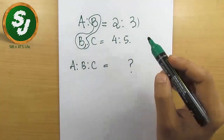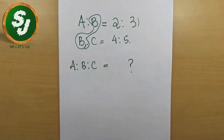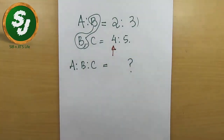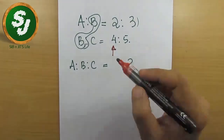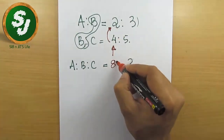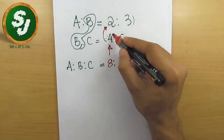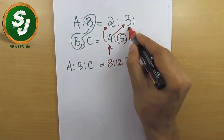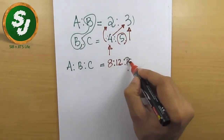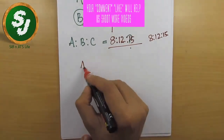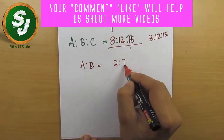Focus on this 4. Take 4 and multiply it with 2 to get 8. Then multiply 4 with 3 to get 12. Then take 5 and multiply with 3 to get 15. So the answer is 8:12:15.